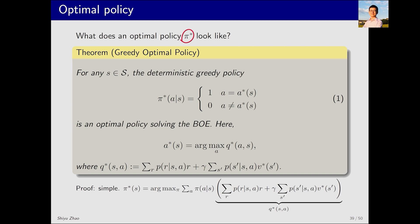While we know that pi star is indeed an optimal policy, let's discuss next what pi star looks like. In fact, it looks like this: at state s, pi star selects a star, which corresponds to the action with the highest action value. For this action, the policy assigns a probability of 1, and for all other actions, a probability of 0. This policy is both deterministic and greedy, focusing solely on selecting the action with the highest action value.